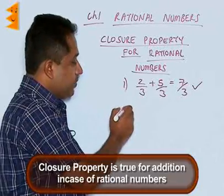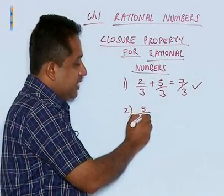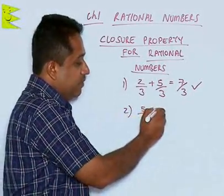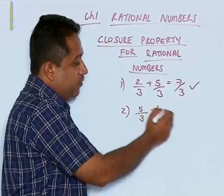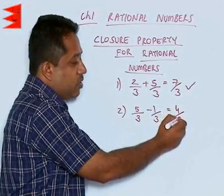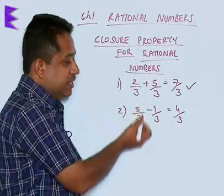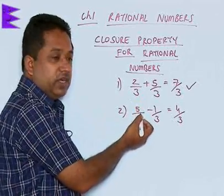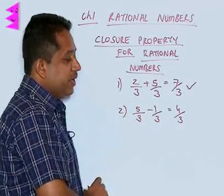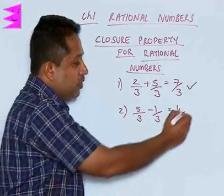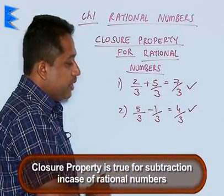What about subtraction? We look at another example: let us say 5 by 3 and we are subtracting 1 by 3. 5 minus 1, we are getting 4 upon 3. The denominator is the same in both cases in the examples that we have taken, so we can directly add or subtract the numerators. Here also, for subtraction, we find that the closure property holds good.